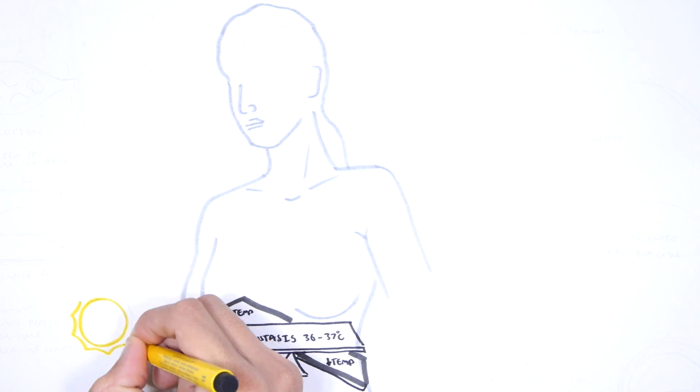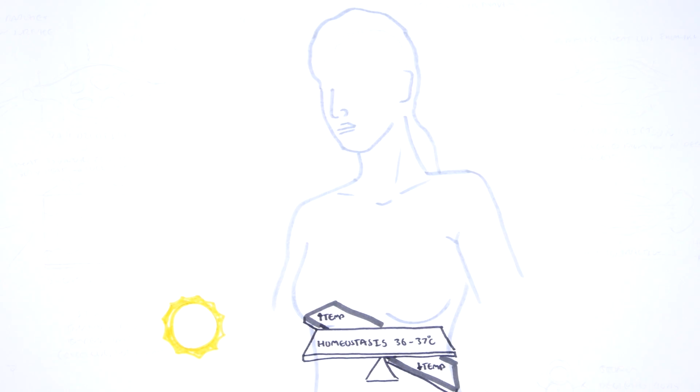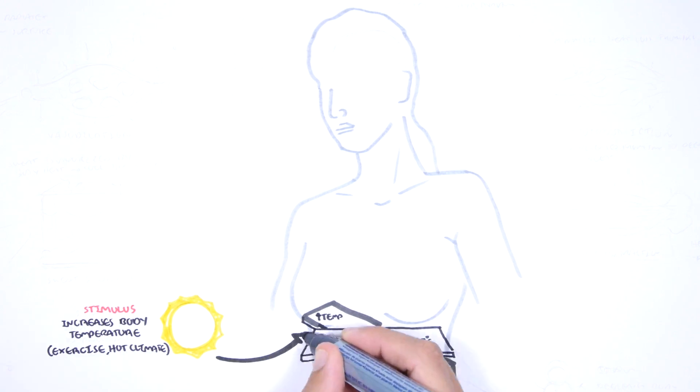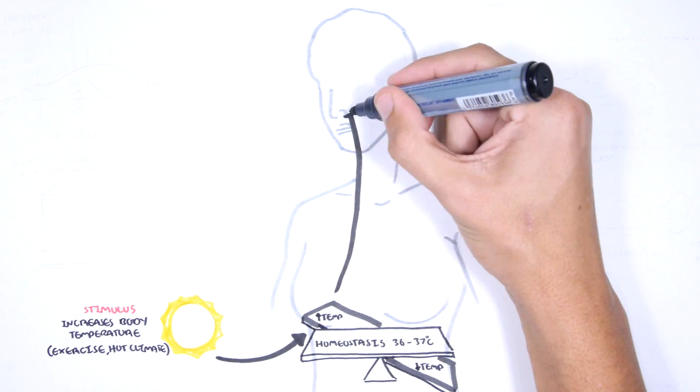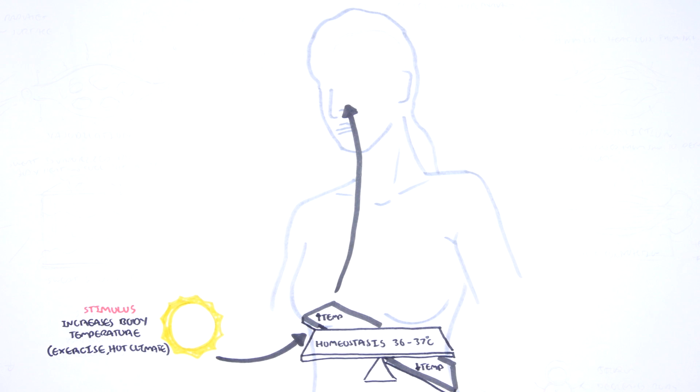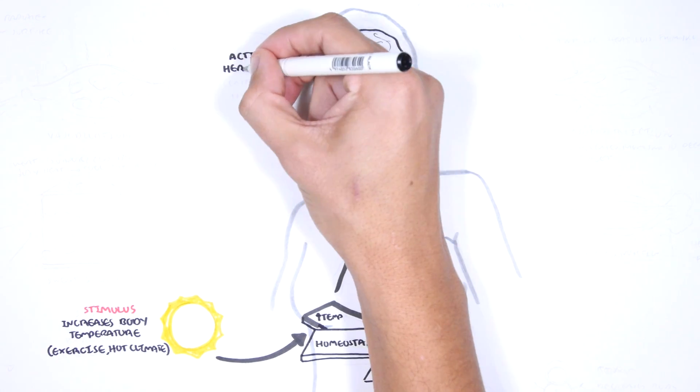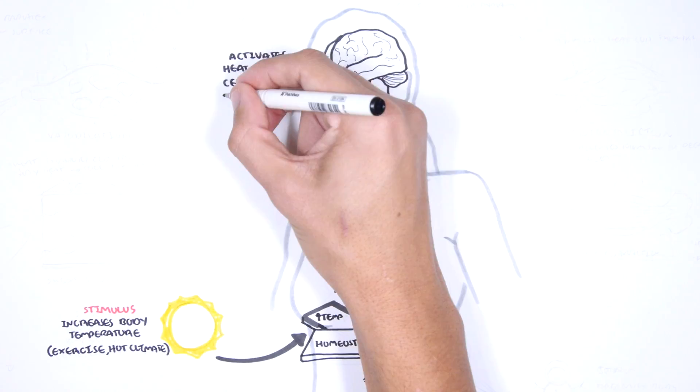The stimulus is, for example here, an increase in body temperature, because perhaps the person is exercising or it's super hot outside. This increase in body temperature will be detected by the brain, which is the control center, and will activate mechanisms to lose heat to keep your body cool, and this is done via the hypothalamus.